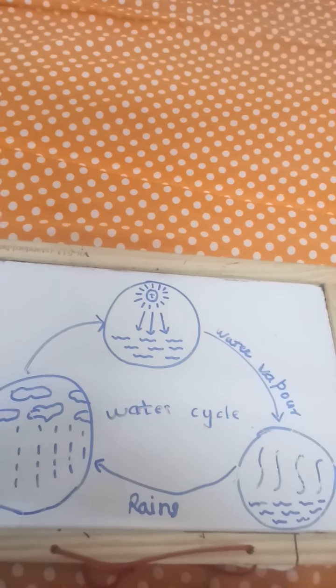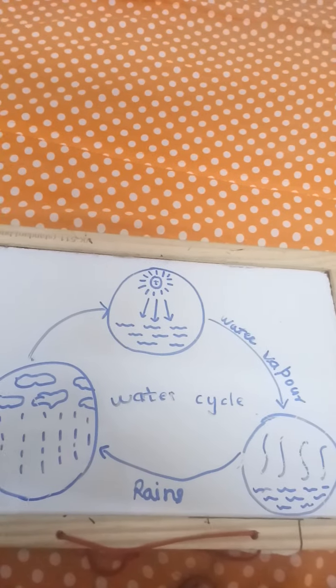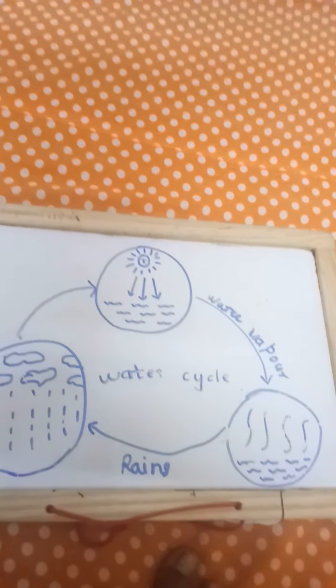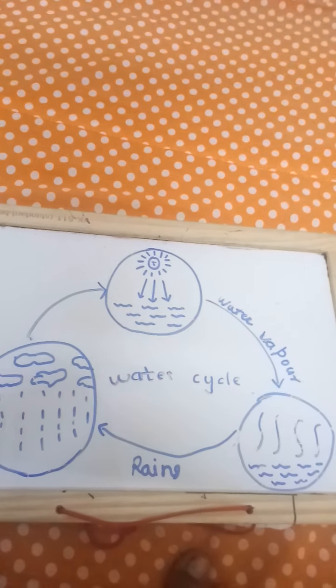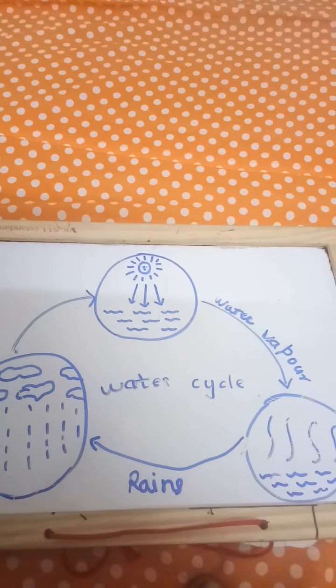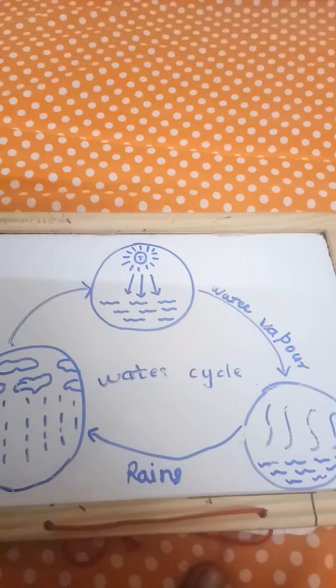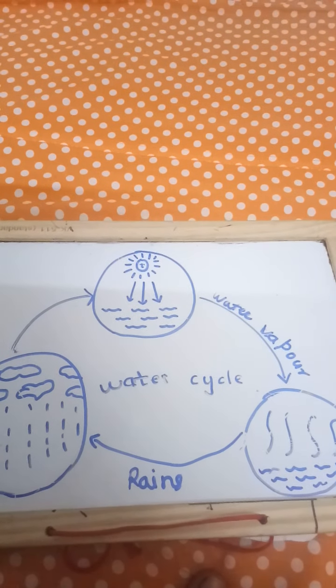Water vapors, that is called as water vapors. Then that water vapors go in clouds, and then the clouds also becomes hot and rain comes. This process happens again and again.